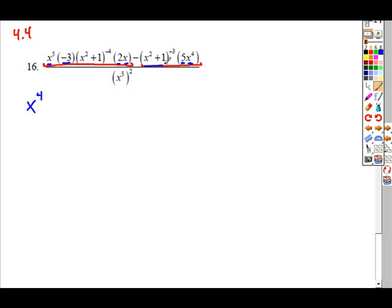Okay, we move to the next base here, the x squared plus 1s. This is also a base common to both groups. So we remove the smallest power. So which is smaller, negative 4 or negative 3? Negative 4 is, again, further to the left on the number line.